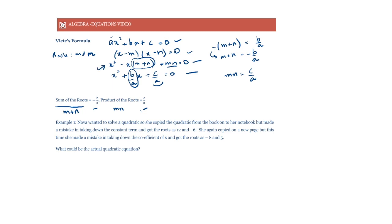We can also write the quadratic as x² − (sum of roots)·x + (product of roots) = 0. This is a useful form. Remember: sum of roots = −b/a and product of roots = c/a.